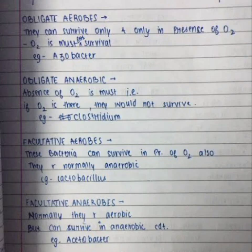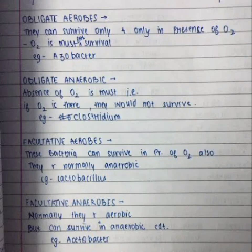Now, facultative aerobes: these bacteria can survive in the presence of oxygen also, but they are normally anaerobic. That means they normally flourish and grow in anaerobic, without-oxygen conditions. But if oxygen becomes available to them, they can compromise and still survive.